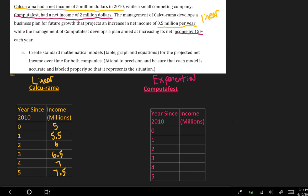Whereas Computafest is going to be starting at $2 million, it's a little bit smaller, and then multiplying by 1.15 for the 15%. Anytime I have a scenario where they give me a growth or decrease by a percentage, I know that this is a situation of exponential growth or decay because of the percentage.